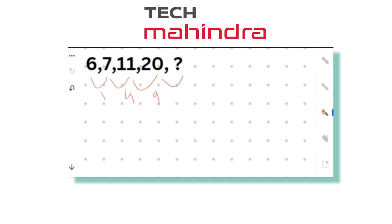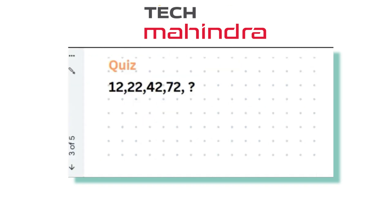The differences follow a square pattern: 1^2, 2^2, 3^2. So the next difference is 4^2 = 16, meaning the missing number is 20 + 16 = 36. So the answer is 36. You can see that prime number patterns, square patterns, n-to-the-power-n patterns, and composite difference patterns can all appear. Here's a quick problem — I will not solve this one; please pause and give the answer in the comment section.